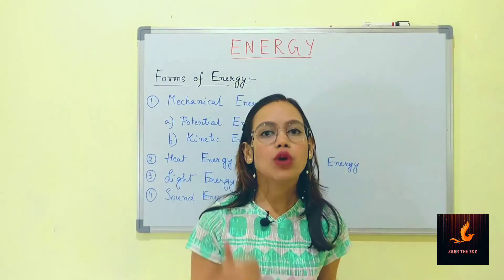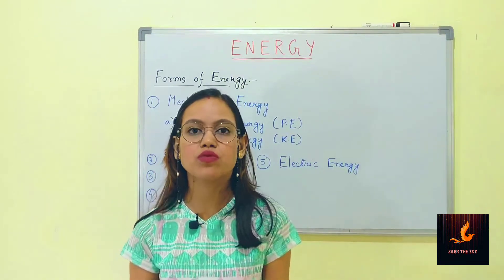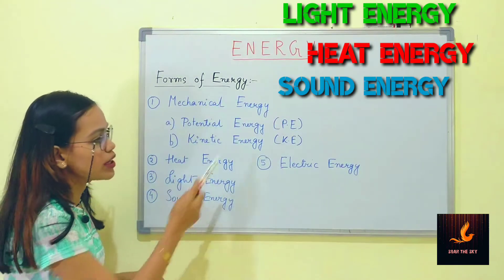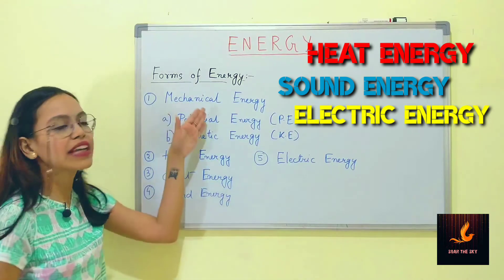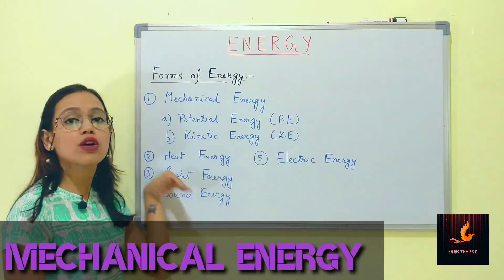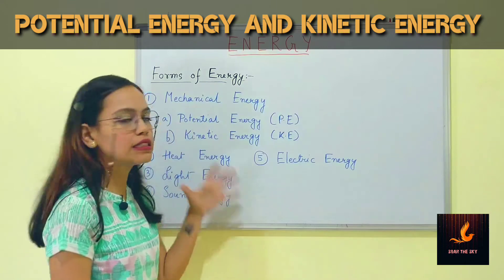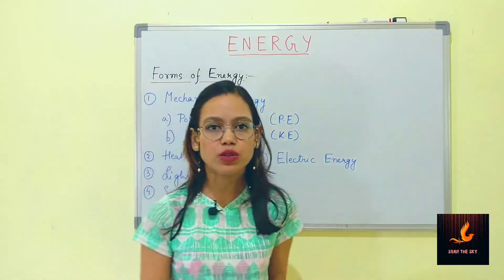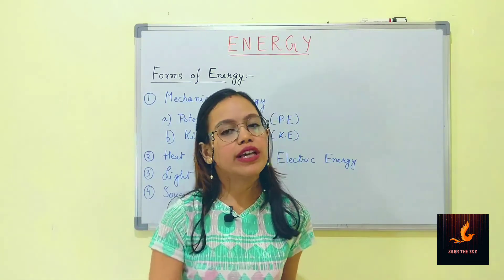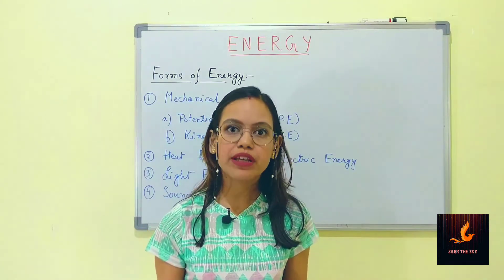For non-living things, it works in a bit different way. There are various forms of energy such as light energy, heat energy, sound energy, electrical energy, and mechanical energy — which is one of the most important forms of energy, consisting of two parts: potential energy and kinetic energy. Some energy can be stored and reused, while some energy gets completely exhausted and has to be generated from the very beginning again.